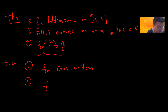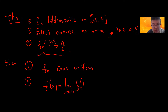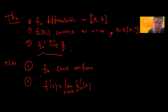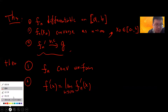The second conclusion is that you can exchange the limit and the derivative. So basically, uniform convergence solves everything we were worried about.